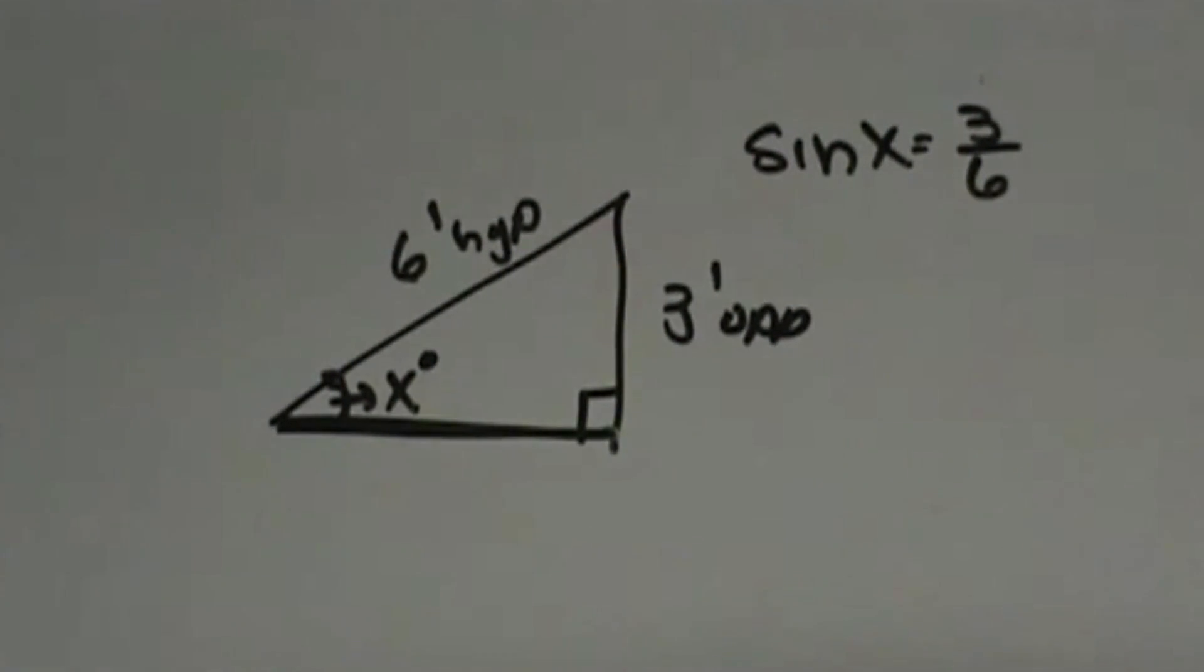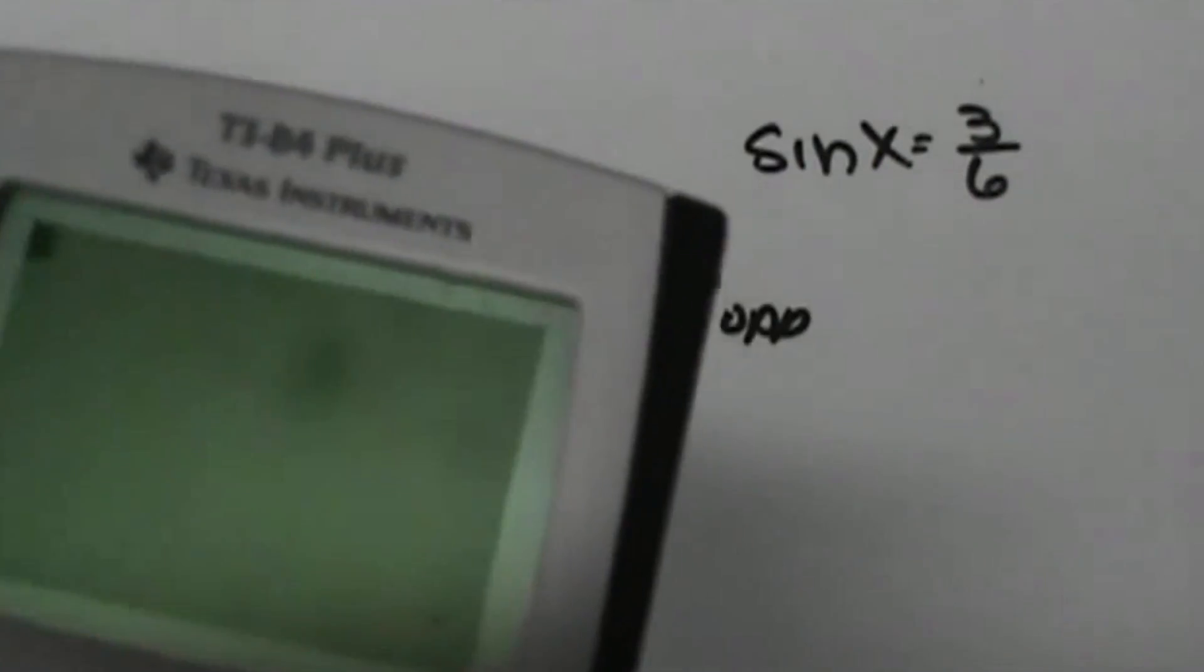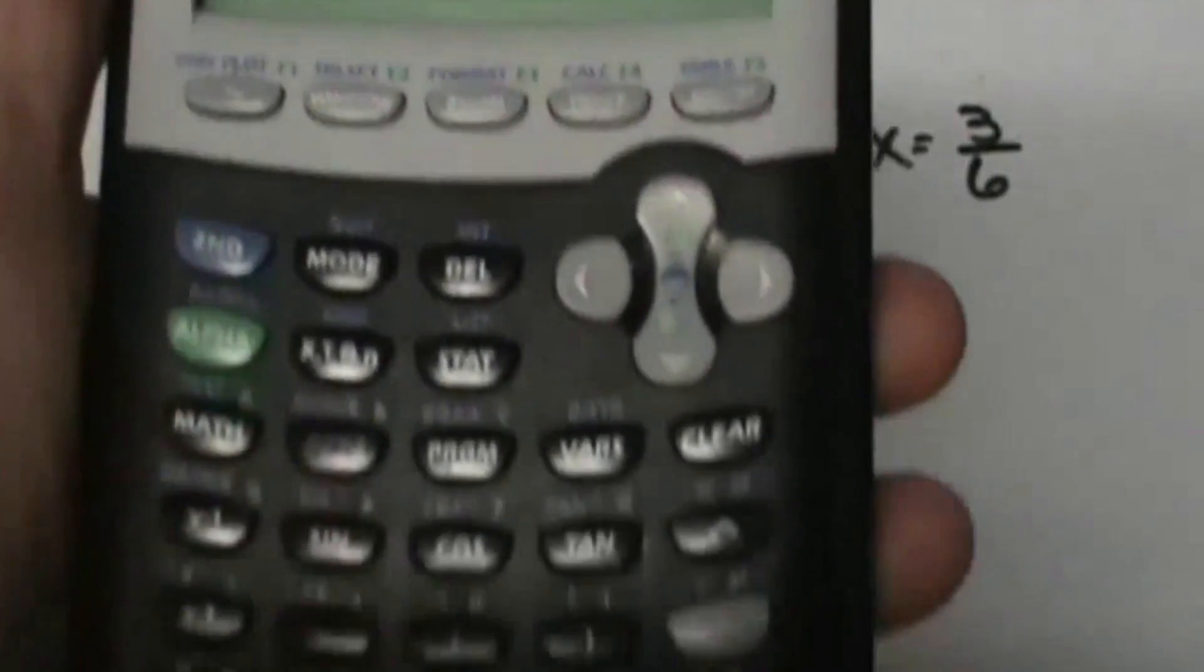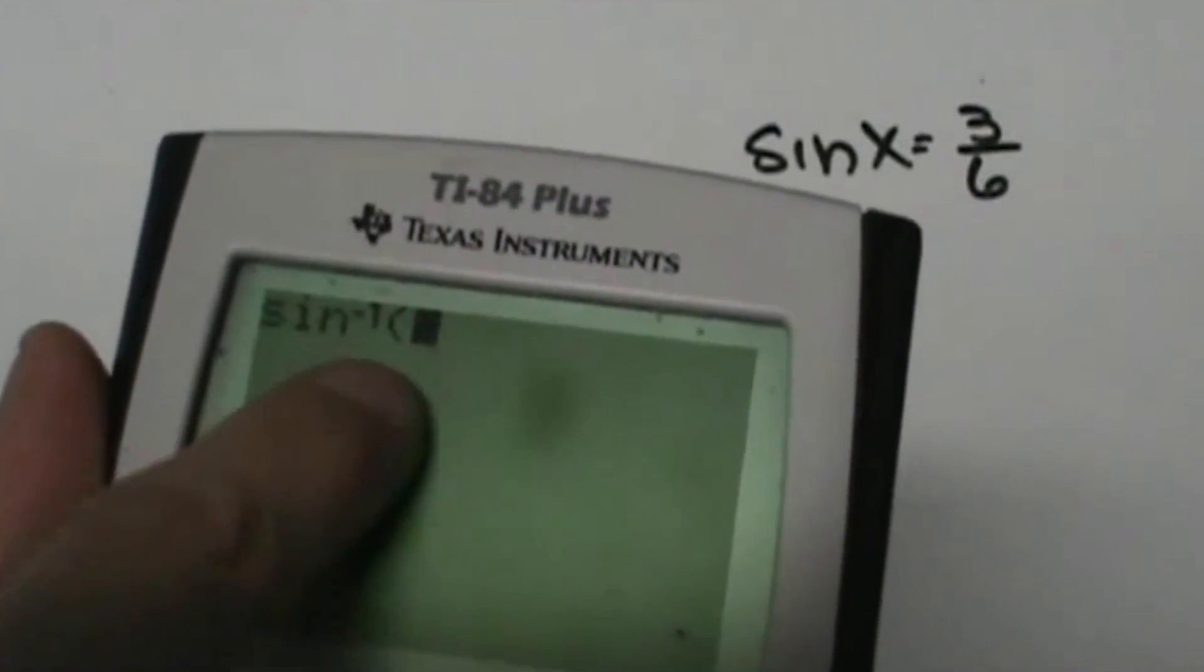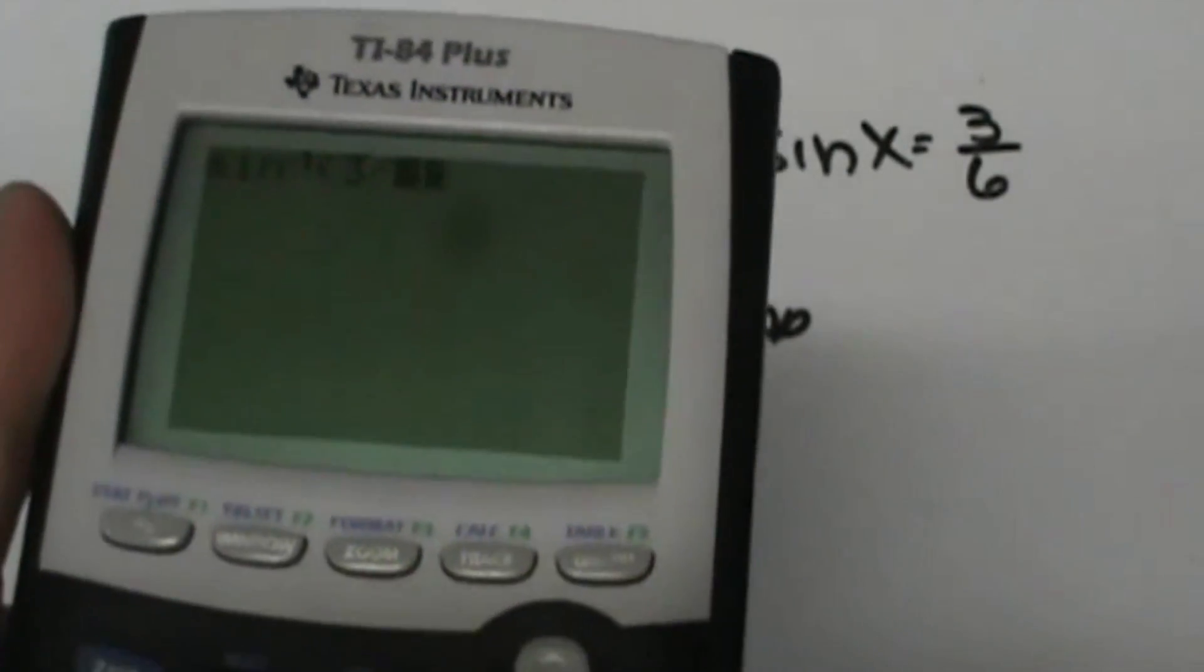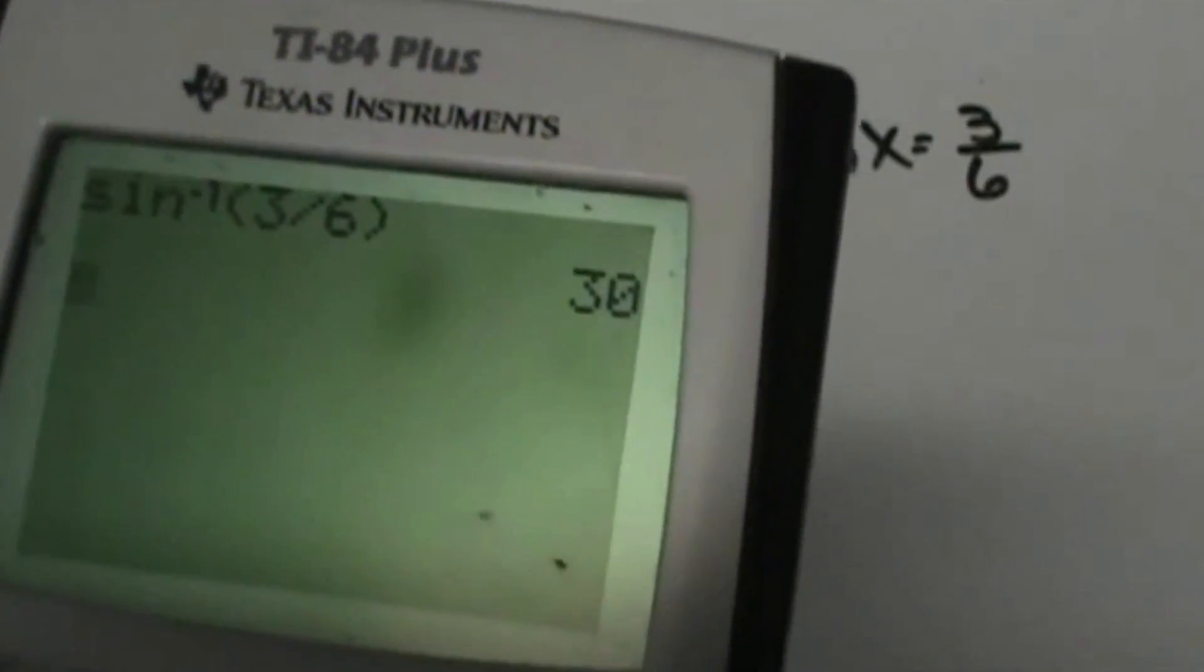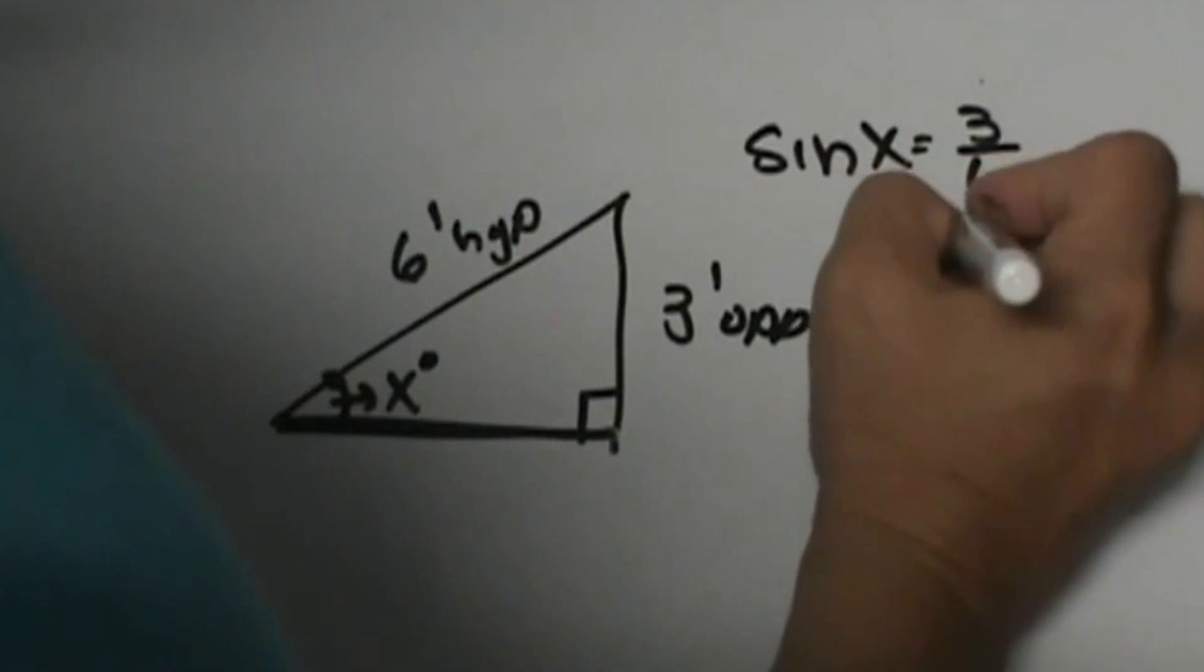Now let's grab our calculators. This is going to be an inverse problem, correct? So let's clear out what we have and take the inverse. Take the second function, sine to the negative 1, equals 3 divided by 6, which is 0.5 if you want to put the decimal in. So that means our angle measure is 30 degrees.